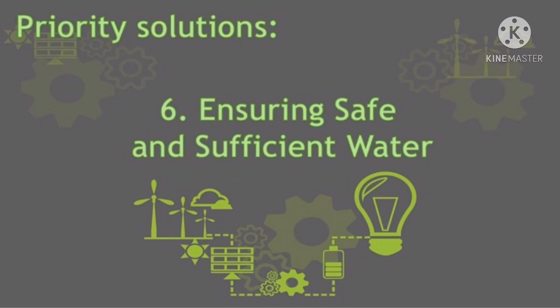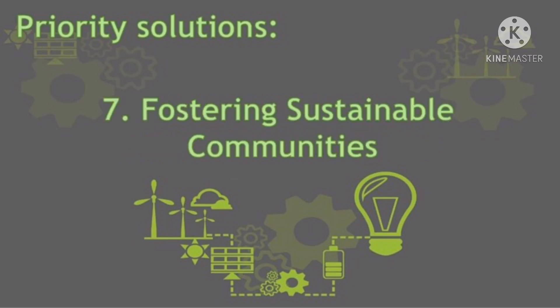Priority solution number six: Ensuring safe and sufficient water. Clean and plentiful water is the cornerstone of prosperous communities. Priority solution number seven: Fostering sustainable communities. The choices we make for where and how we live have enormous impacts on our well-being, economy, and natural environment. The government develops and advocates sustainable solutions for our communities.